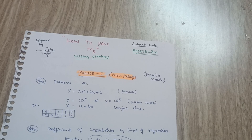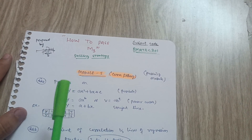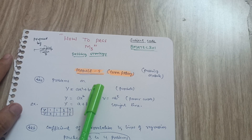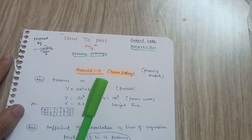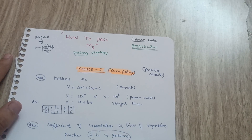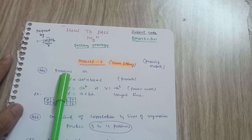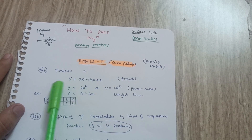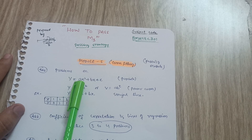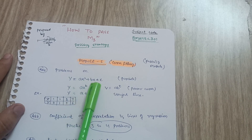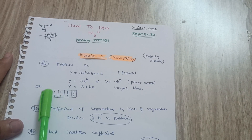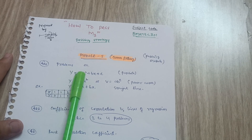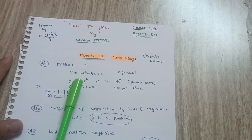Let us start with Module 5, which is comparatively easier than all other modules. You should cover problems on fitting a parabola — questions will be like 'fit a parabola through y = ax² + bx + c.' A table with x and y values will be given and you have to fit the parabola through those points.